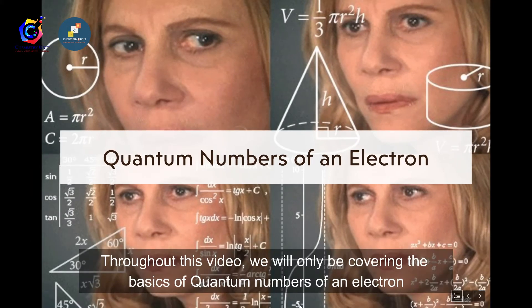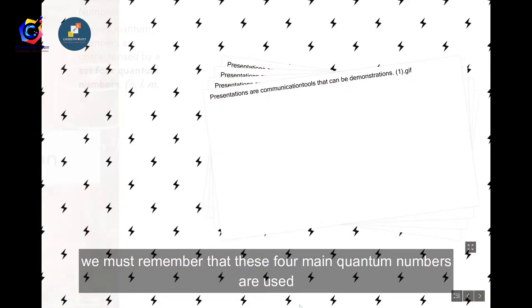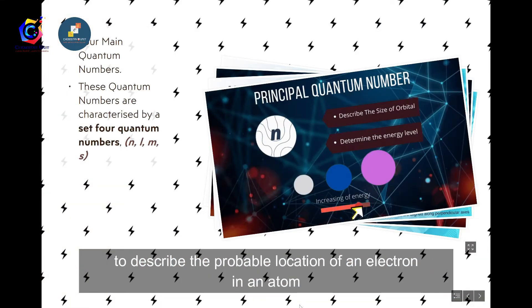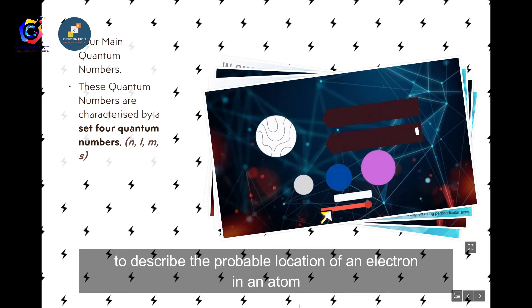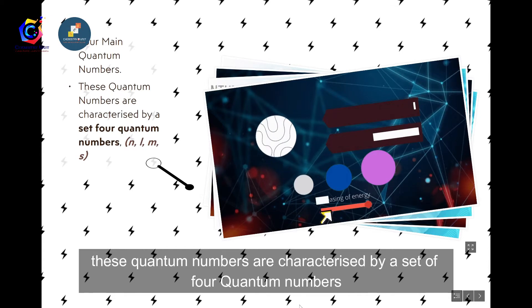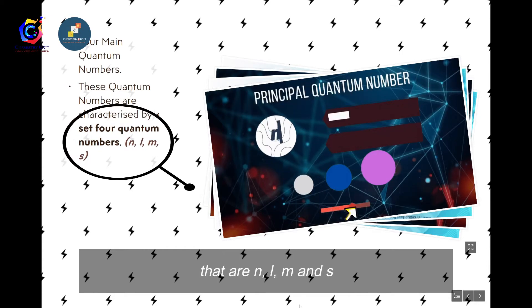Throughout this video, we will only cover the basics of quantum numbers of an electron. These four main quantum numbers are used to describe the probable location of an electron in an atom, and they are characterized by the set: n, l, m, and s.